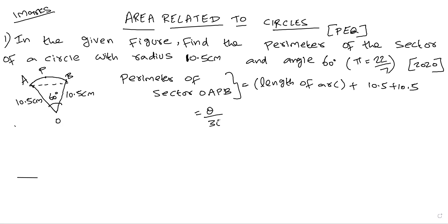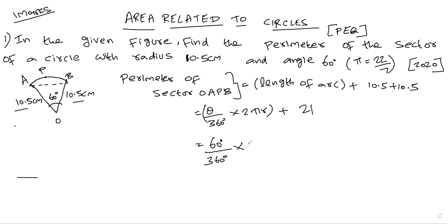Substituting: 60 divided by 360 into 2 into 22 by 7 into 10.5. Simplifying: 2 into 22 by 7 into radius 10.5. Cancelling 7 into 10.5 gives 1.5, so we get 22 into 1.5 divided by 3.